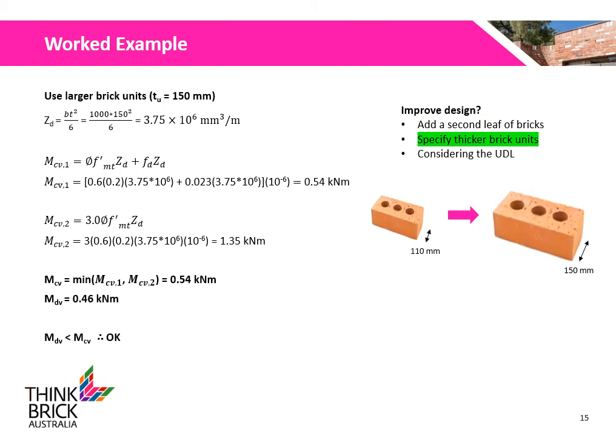Specifying a larger unit will increase the section modulus of the bedded area, which in turn increases the overall vertical bending capacity. Using a 150 mm thick brick, the new section modulus is calculated to be 3.75 × 10⁶ mm³ per metre. Thus, the vertical bending moment capacity is calculated to be 0.54 kNm, which is greater than the design vertical bending moment.